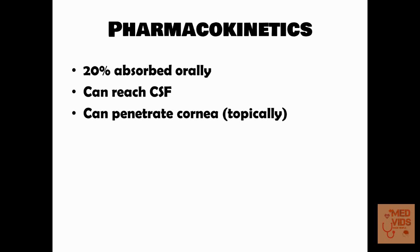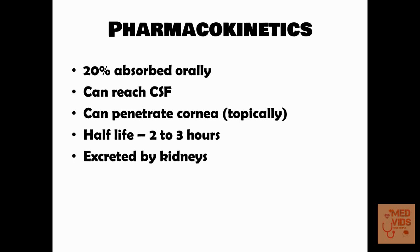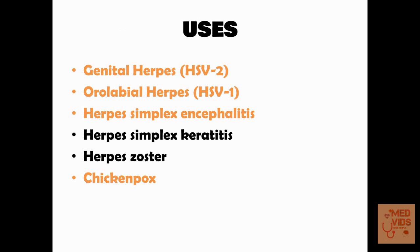Regarding pharmacokinetics, acyclovir is 20% absorbed orally. It can cross the CSF, meaning it can be used in conditions like encephalitis. It can penetrate the cornea when used as topical eye ointments. Its half-life is relatively short at about two to three hours. It is excreted by the kidneys via glomerular filtration and tubular secretion. Uses include genital herpes as topical, oral, or parenteral form in severe cases, and oral labial herpes.